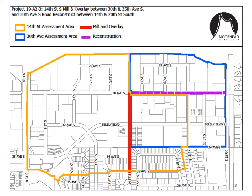This map shows the assessment districts for this project. The dashed purple line shows the limits of the work on 30th Avenue South, and the red line shows the limits of the mill and overlay on 14th Street South. Properties immediately adjacent to either of those projects will receive a front footage assessment based on the rate for the type of work being done there. The yellow line is the boundary for the 14th Street area-wide assessment, and the blue line is the boundary for the area-wide assessment for 30th Avenue South.